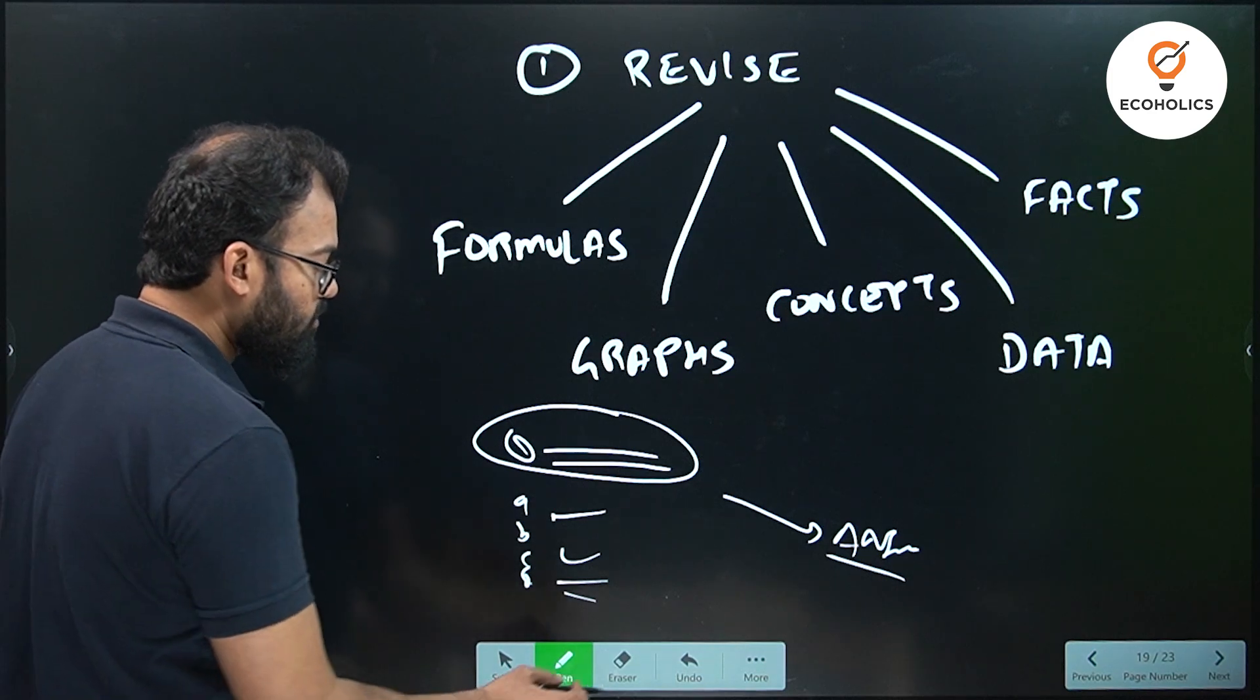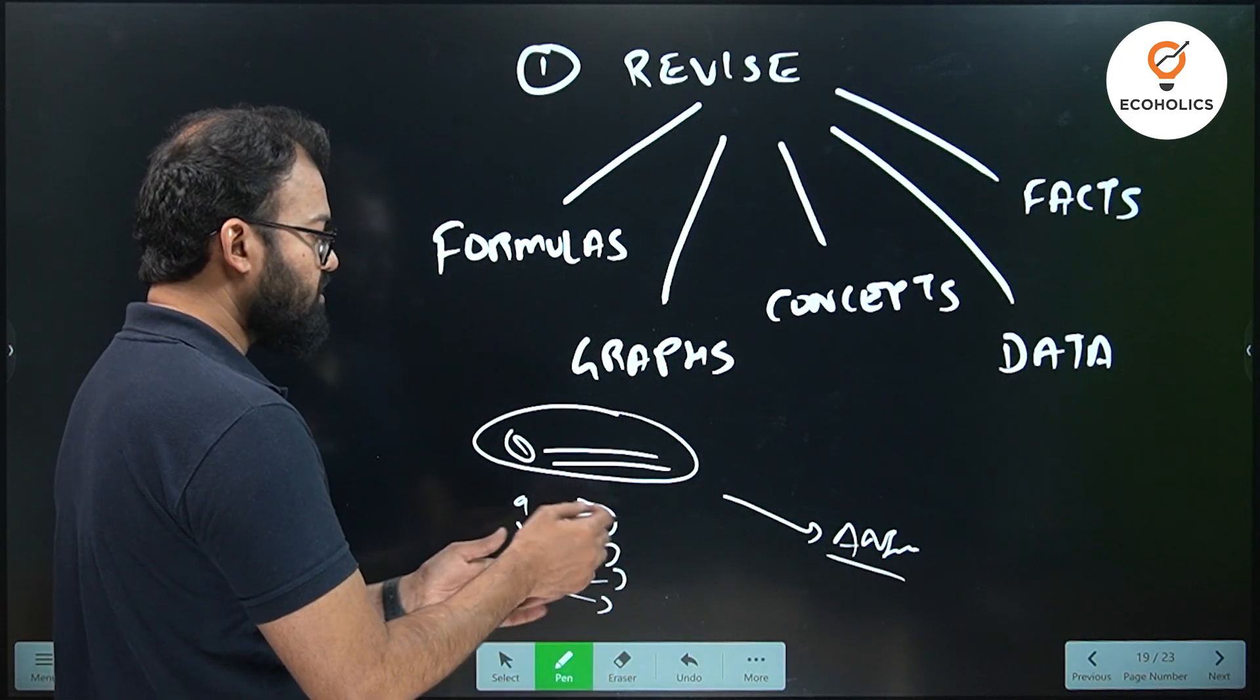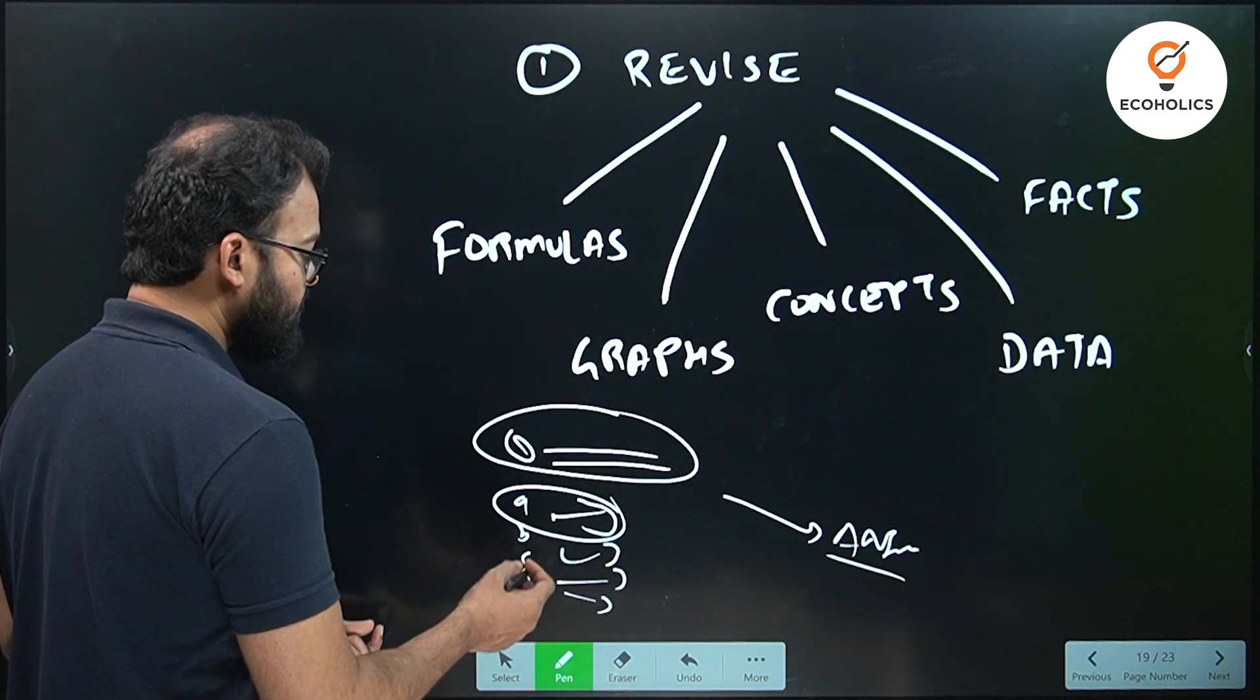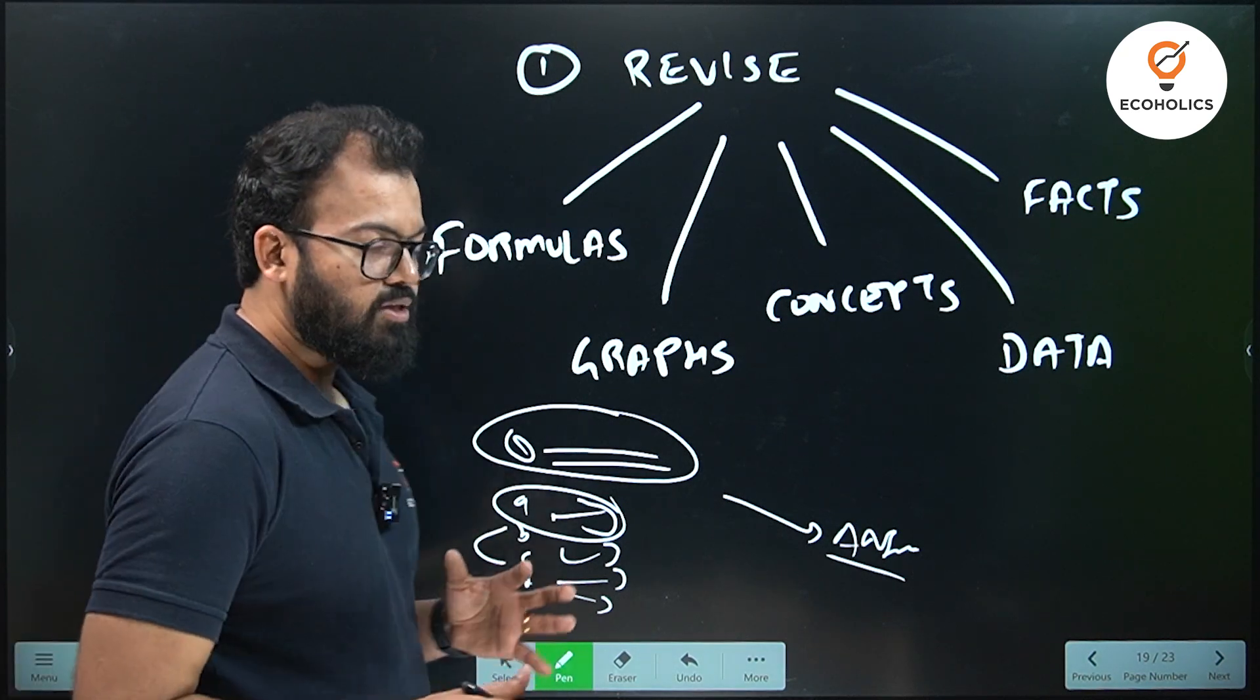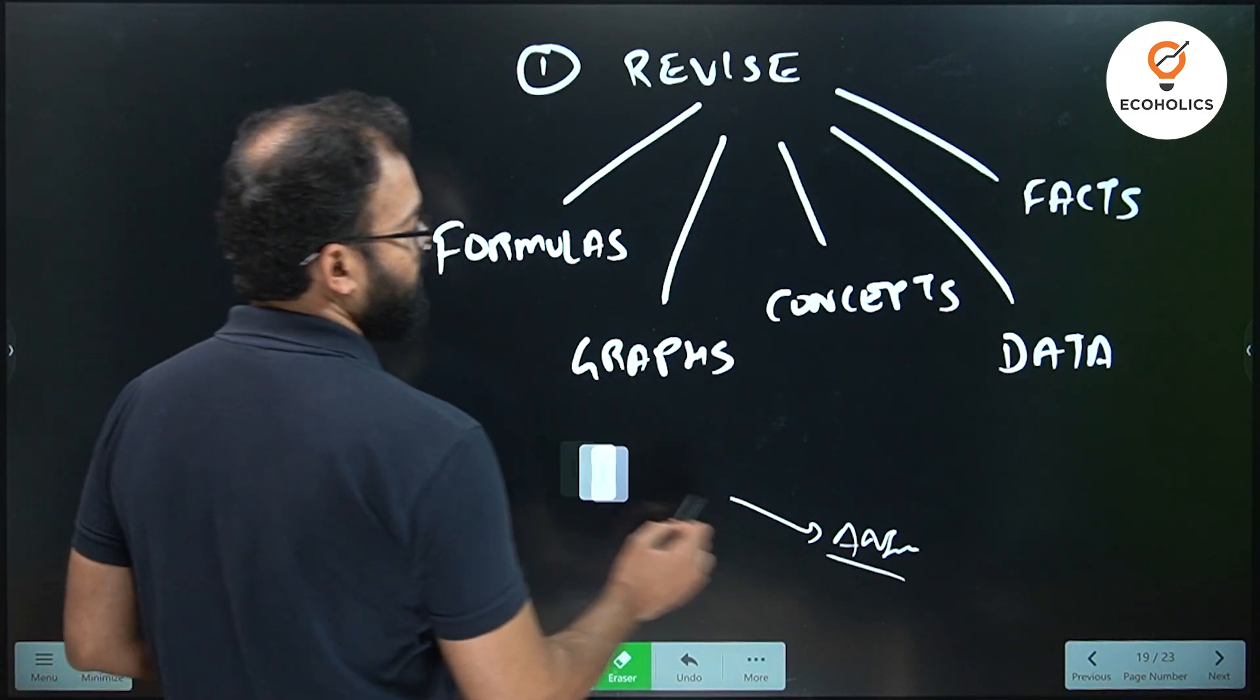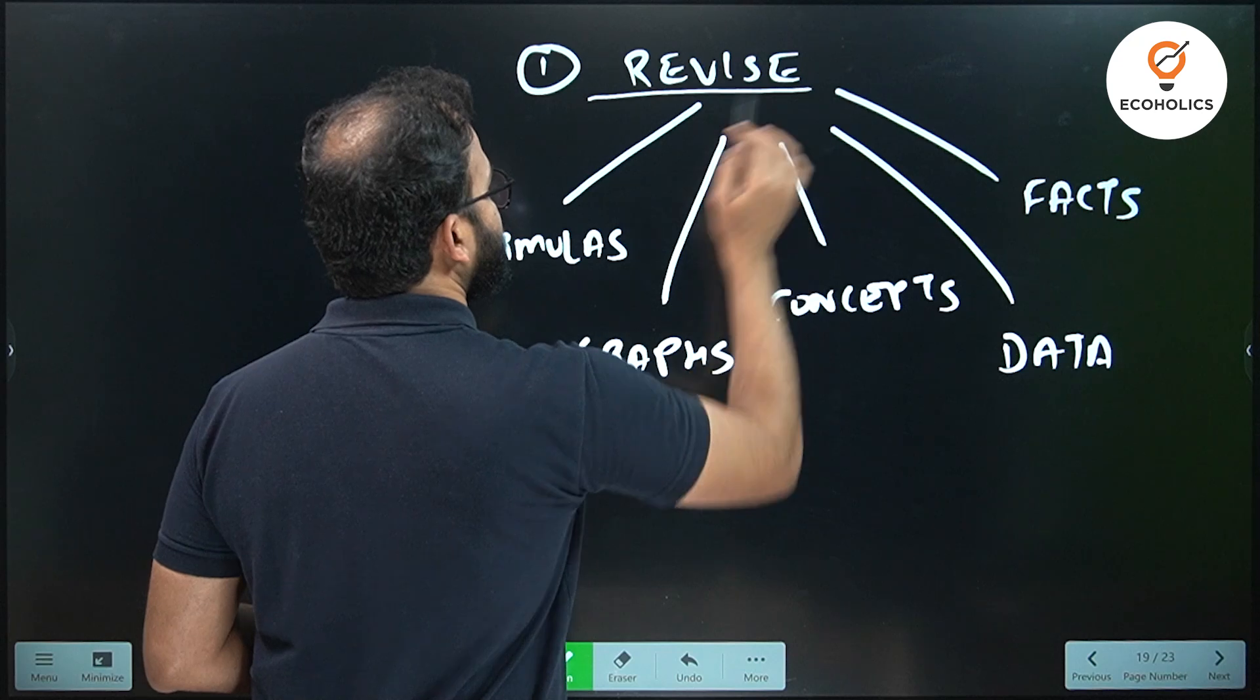But here what people do is when they read options, they tend to get confused - answer A, this may be the answer, or option A is not there, 50-50 between B and C - and that is where you mess up things. So for this, revision is important. The approach I told you, I will tell more in the upcoming points. But here, revision is the key.